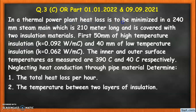In a thermal power plant, heat loss is to be minimized in a 240 millimeter steam main pipe which is 210 meters long and is covered with two insulation materials. The first is 50 millimeters of high temperature insulation with a thermal conductivity of 0.092 W/m·°C, and the second layer is 40 millimeters of low temperature insulation with a thermal conductivity of 0.062 W/m·°C.